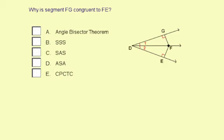So that means we have a distance from point F to point G and from point F to point E. This is an angle bisector theorem situation. This ray DF bisects angle GDE.